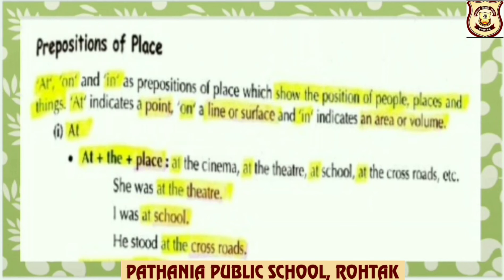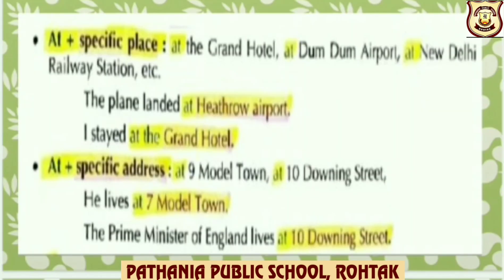Now let us discuss uses of 'at' as a preposition of place. At plus 'the' plus place — at is used to mention a specific place. For example: at the Grand Hotel, at Dum Dum Airport, at New Delhi Railway Station, etc. The plane landed at Heathrow Airport. Here, preposition 'at' plus specific place has been mentioned, that is, Heathrow Airport.